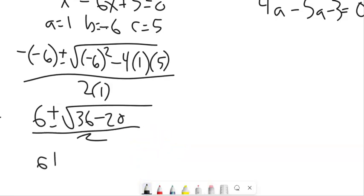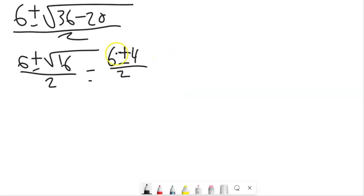So now we've got 6 plus or minus square root of 16. Well, square root of 16 is 4. 6 plus or minus 4 over 2. Keep going. 6 plus 4 is 10, 10 over 2. 6 minus 4 is 2, 2 over 2. So my answer should be 5 and 1.